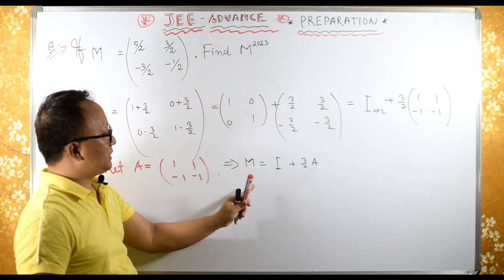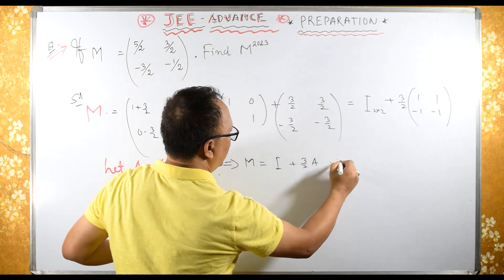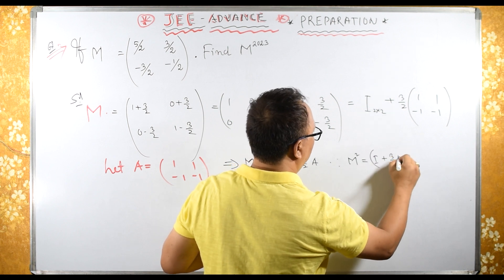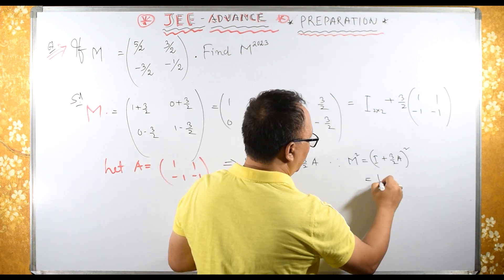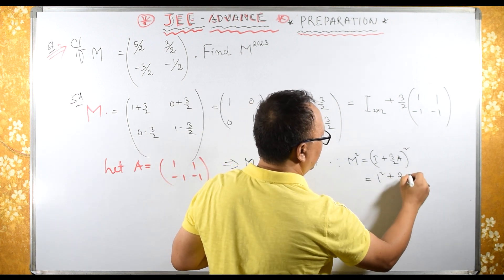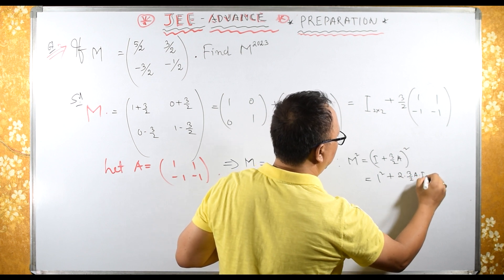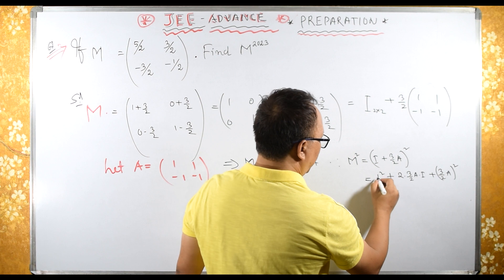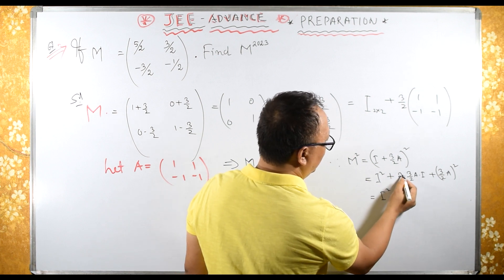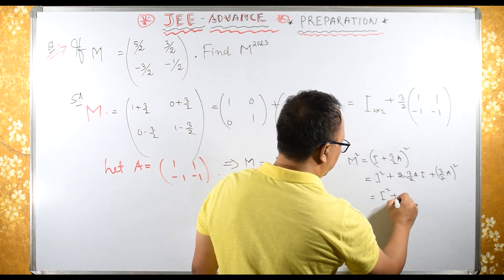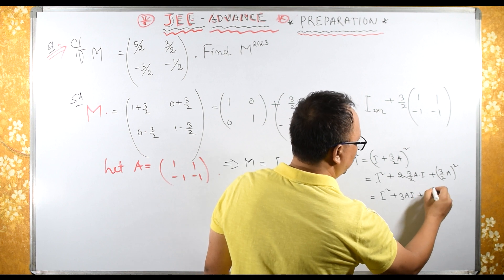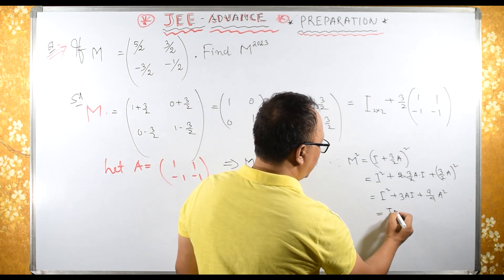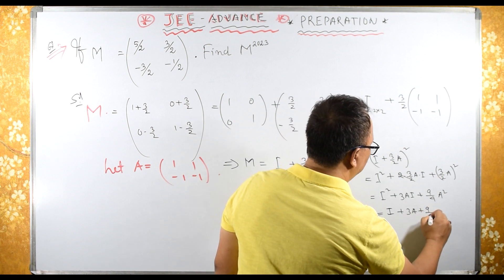Now in order to find M^2023, let us first find M squared. Squaring both sides, we have (I + (3/2)A) squared, which equals I squared plus 2·(3/2)·A·I plus (3/2)²·A squared. Here I squared is I, the 2 gets cancelled, so we have I plus 3A plus 9/4·A squared.